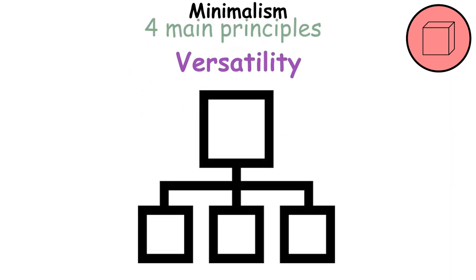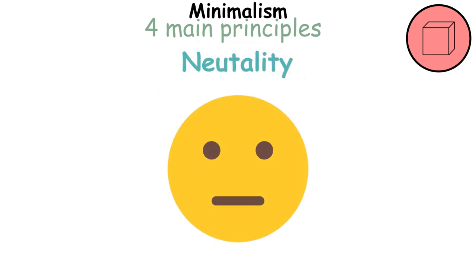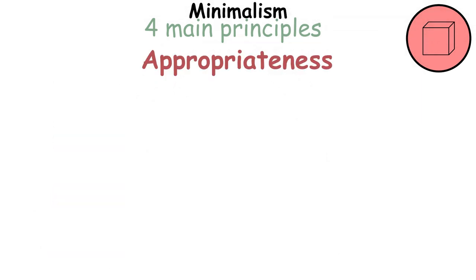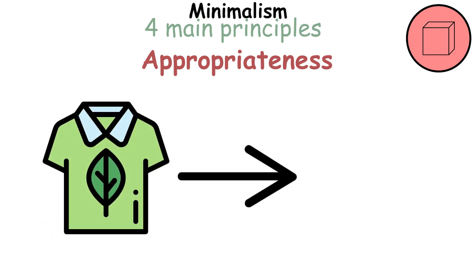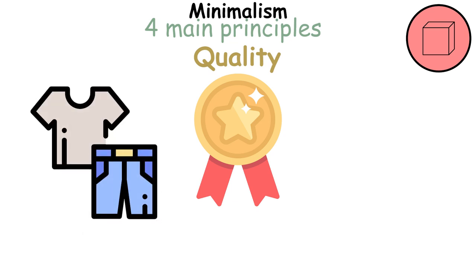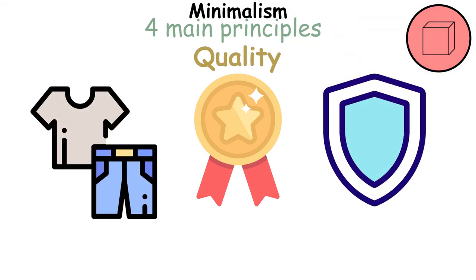The minimalist wardrobe is characterized by four main principles. Versatility, every piece should serve multiple purposes. Neutrality, the color palette is usually made up of neutrals like navy, gray, brown, and black. Appropriateness, the clothes should be suitable for your lifestyle. And quality, since a minimalist wardrobe contains fewer items, each piece needs to be durable and well-made.